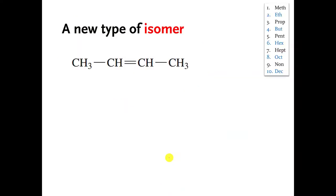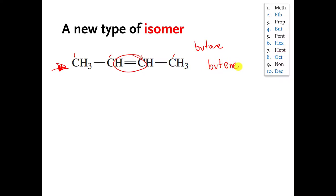So if I showed you this molecule and asked what its name is, you would say: there are four carbons in a row, so that's like butane, but it has a double bond between the carbons, so it's going to be called butene. We have to number the carbons — one, two, three, four — and the double bond starts at carbon number two, so this molecule is called 2-butene.